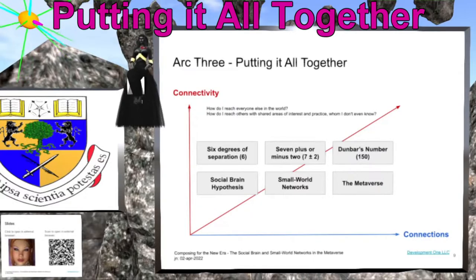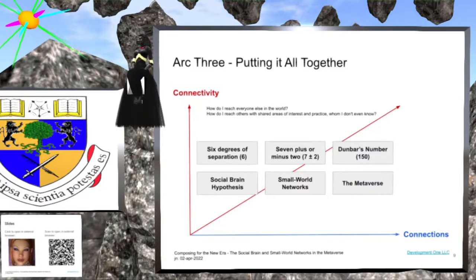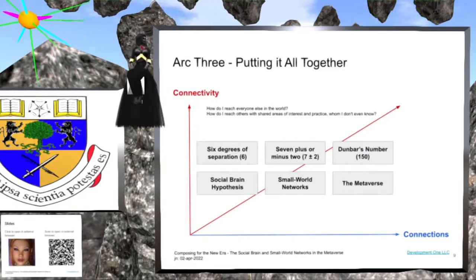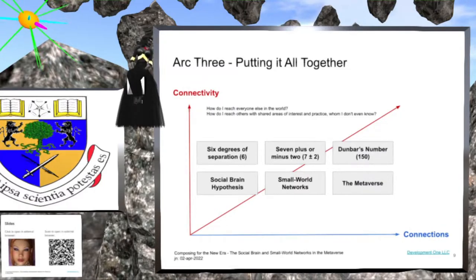Putting it all together. Recall our problem statement: how do I reach everyone else in the world with shared areas of interest and practice whom I don't even know? A chart shows a blue horizontal arrow representing increasing connections and a red vertical arrow representing increased connectivity. The diagonally rising arrow shows connectivity increasing as a result of factors such as six degrees of separation, small world networks, and now a new factor: the metaverse.